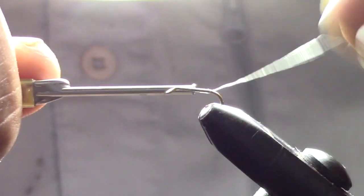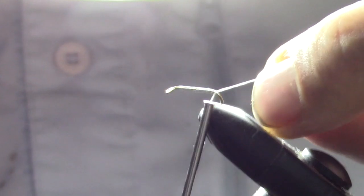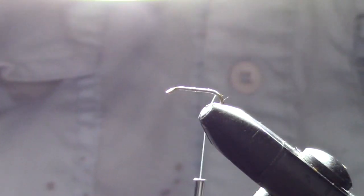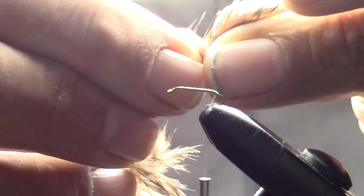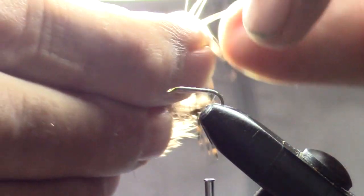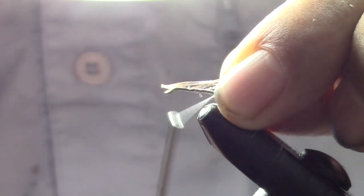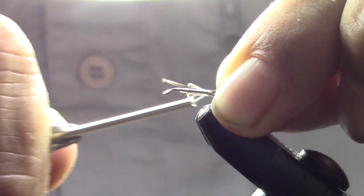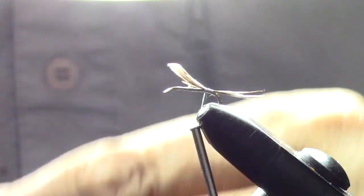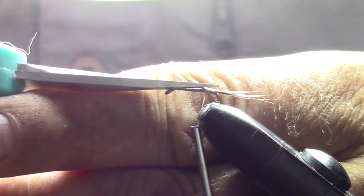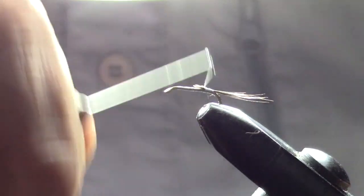We're going to wrap the hook back past the curve, take a little tuft of feather, and tie it in for the tail. Trim off your excess, and we'll run the thread back up.